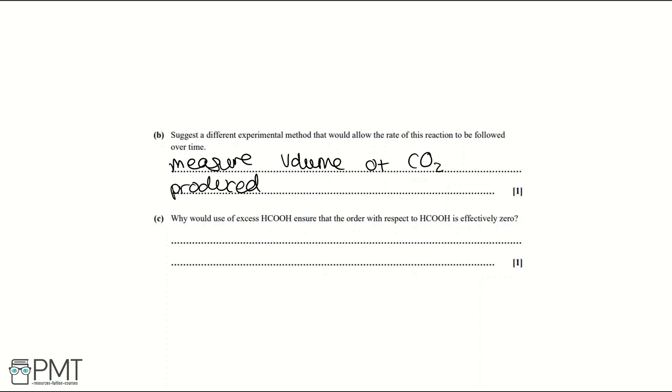Part C: Why would use of excess HCOOH ensure that the order with respect to HCOOH is effectively zero? The reason why we use an excess of HCOOH is because that means that the concentration of HCOOH would be constant and therefore the order with respect to HCOOH would be effectively zero. And this statement will get you the mark.